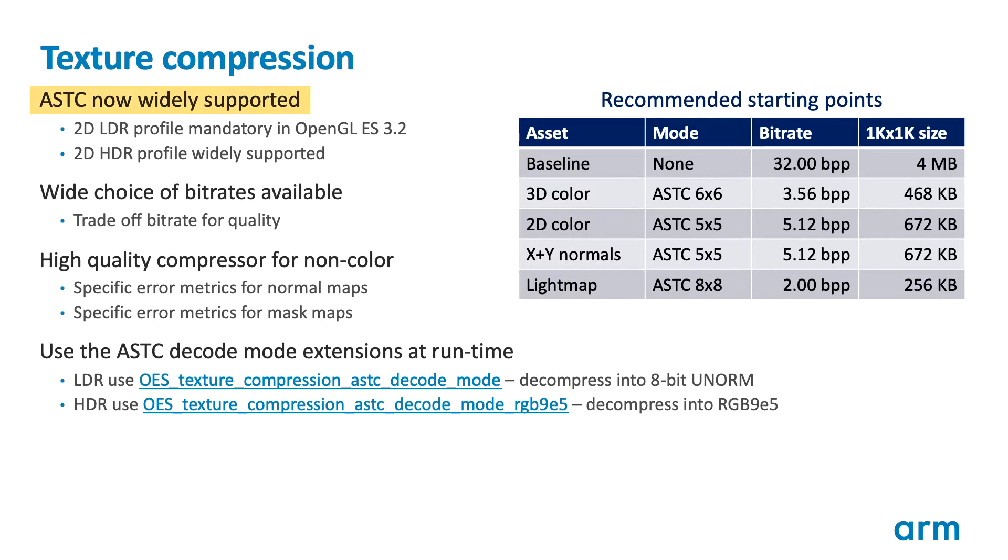In terms of compressed texture usage, we'd recommend that new titles consider using the ASTC format by default, with fallback to ETC2 if ASTC is not available. ASTC has been shipping in devices since 2012 and is mandatory in OpenGL ES3.2, so support for the 2D LDR profile is now ubiquitous in mobile devices, and many devices support the 2D HDR profile too. ASTC has two major advantages over ETC2 plus EAC. Firstly, it is a much higher fidelity compression format, achieving significantly better image quality at the same bitrate. Secondly, it provides a wide choice of bitrates, allowing users to really fine tune their texture footprint and bandwidth consumption.